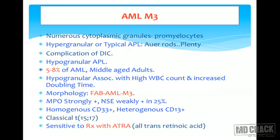AML M3, acute promyelocytic leukemia, is very commonly asked. There are two types: hypergranular and hypogranular. The hypergranular type contains plenty of Auer rods and is known for the complication of DIC. Hypergranular AML M3 occurs in about 5 to 8 percent of AML in middle-aged adults. The hypogranular variant is associated with very high WBC count and increased doubling time, but morphologically still belongs to FAB classification AML M3.